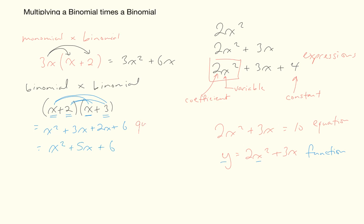This trinomial came from multiplying four terms, and there's a special word for this kind: it's called a quadratic expression. You'll recognize quadratic expressions because they usually have a variable with a square on it, possibly the same variable to the power of one, and then a constant — some combination of x squared, x, and a constant. This is what we'll be looking at for the next three units.